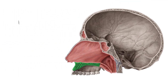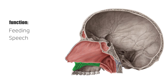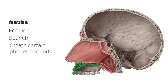The function of the hard palate is both feeding and speech. Before modern surgeries were developed, infants with defective palates couldn't suckle and would often die. The hard palate creates a vacuum which forces the liquid into the mouth so that it can be ingested in both adults and infants. It is also essential, along with the tongue, to create certain phonetic sounds.